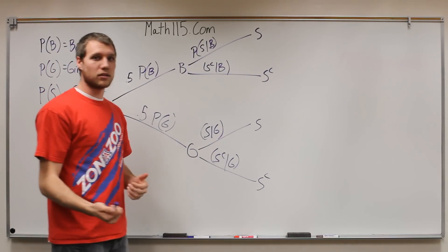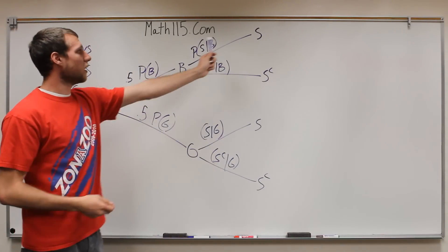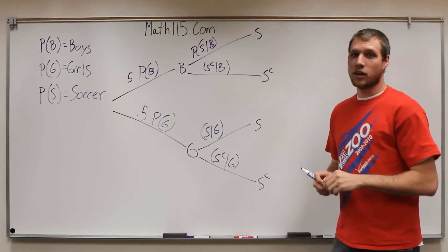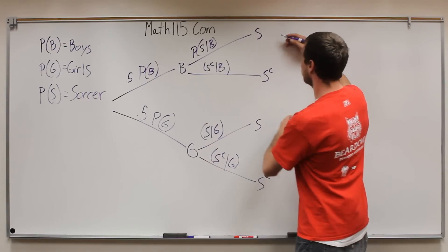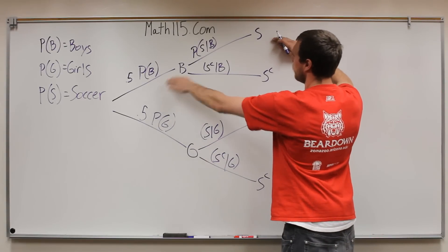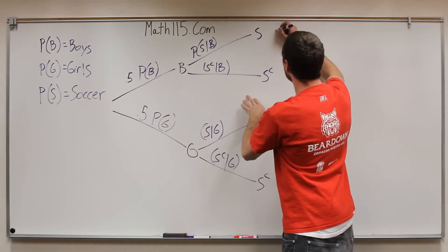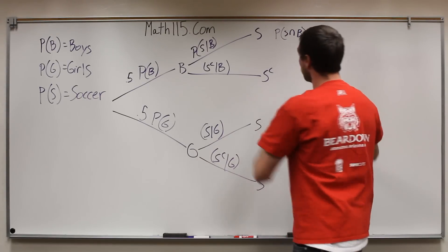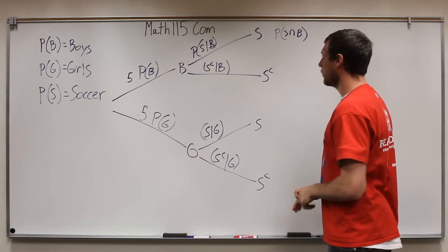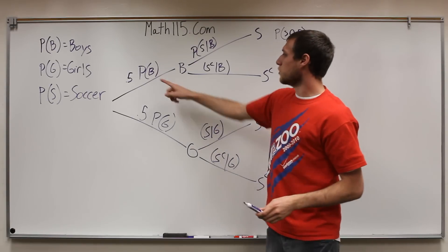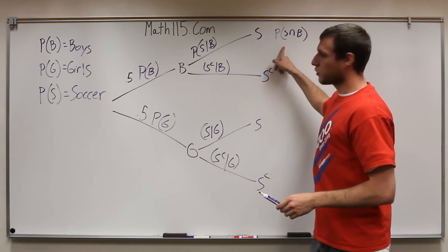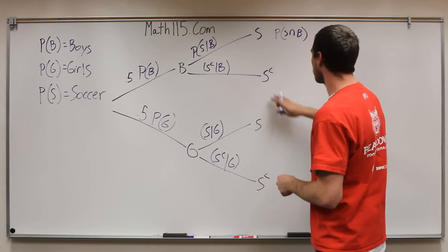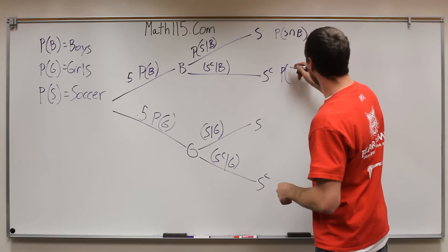So now there's one more element to the Bayes theorem, once you get through this whole thing. And at the end of all of these branches, you can end up mathematically finding their intersection. So the end of these, or these two multiplied together, will then come out to be the probability of soccer intersect boys, or boys intersect soccer, whichever way you want to look at it. Because essentially the way it works is you multiply across. I'll show the formulas for this and how it works. It's the same way as we did it in conditional probabilities.